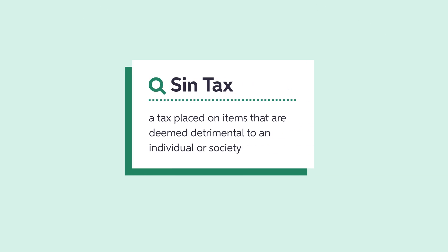First, let's talk about negative externalities. Negative externalities are something bad that happens when a consumer purchases a particular good. An example of this would be cigarettes, which emit pollution. Pollution would be the negative externality. Taxes are often used to prevent people from overspending on goods that may be detrimental, such as alcohol or cigarettes.